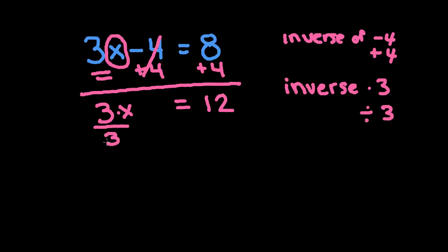So we divide both sides by 3. We cross that off. x is equal to 4.